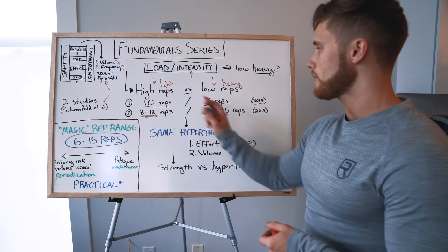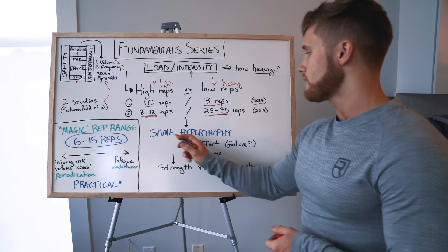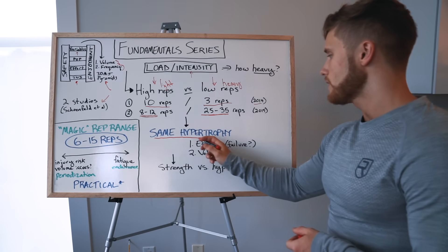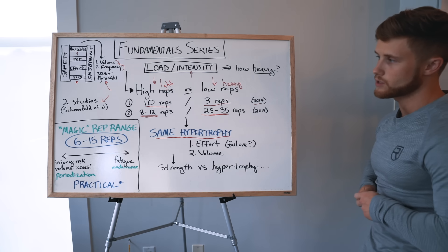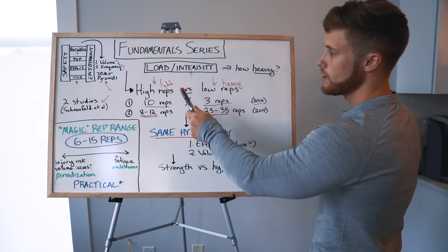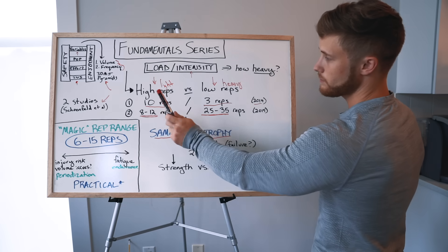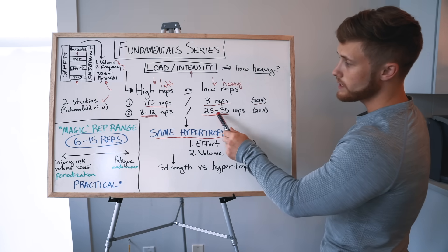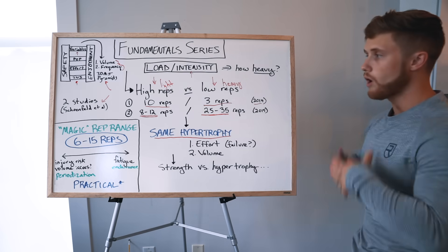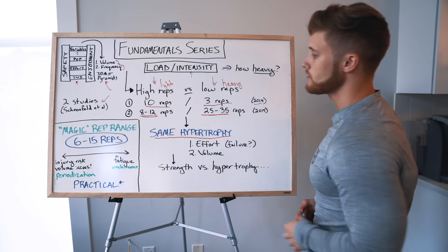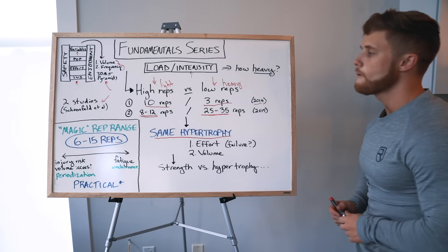Both of these studies found that across both groups, you saw very similar hypertrophy. In fact, to statistical significance, you saw basically the same hypertrophy with very heavy weights and low reps, moderate weight and moderate reps, and very lightweight and very high reps. All of these rep ranges are effective at causing hypertrophy.